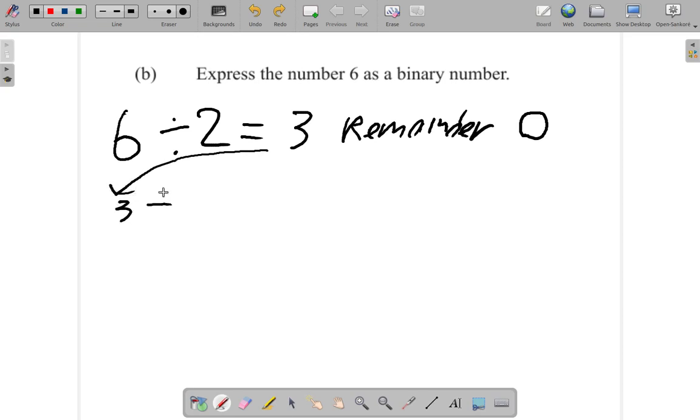And you have 3 divided by 2. Two into 3 goes one time, remainder 1. You bring down the answer 1. One divided by 2, you can't, you put a 0, remainder is 1.